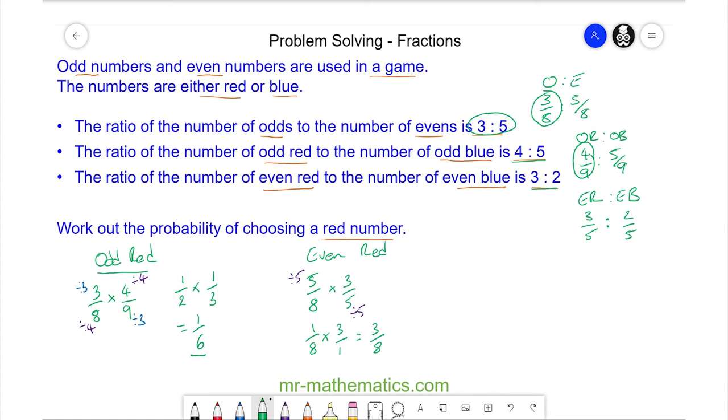Finally, the probability of choosing a red number would be the odd red, 1/6, or the even red which is 3/8. To add these together we need a common denominator which I'm going to use as 24. I'll multiply this fraction by 4, so it's 4/24, and this fraction by 3, so that is 9/24. The probability of choosing a red number is 13 out of 24.